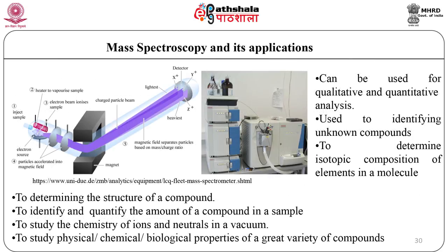Mass spectroscopy can be used for both quantitative and qualitative analysis. It is used to identify unknown compounds from various samples, determine isotopic composition of elements in a molecule, determine the structures of compounds, identify and quantify the amount of a compound in a sample, and study the chemistry of ions and neutrals in a vacuum, as well as physical, chemical and biological properties of a great variety of compounds.